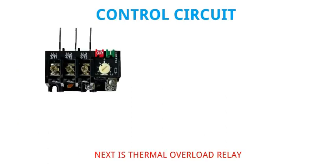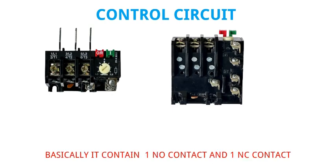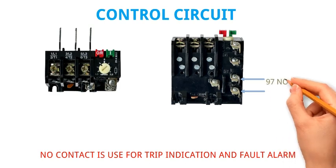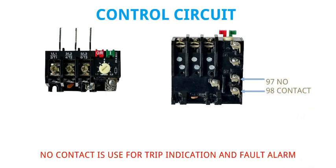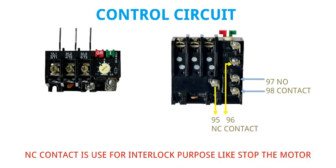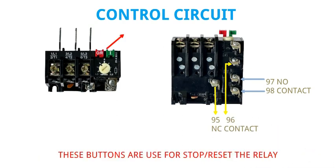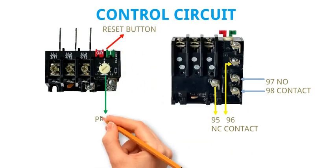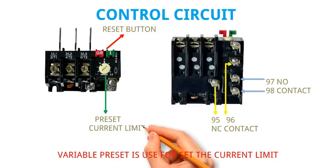Next is the thermal overload relay. It basically contains one NO contact and one NC contact. The NO contact is used for trip indication and fault alarm. The NC contact is used for interlock purposes, such as stopping the motor. The buttons on the relay are used to stop or reset it. The variable preset is used to set the current limit.